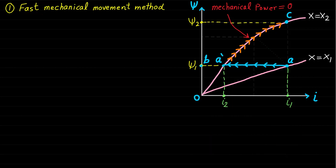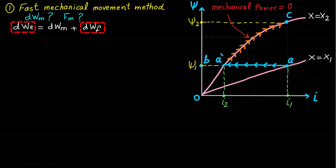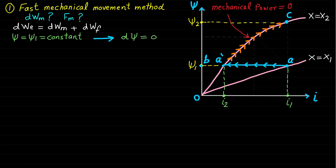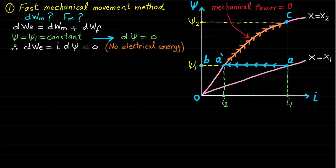To identify the change of mechanical energy DWM and the mechanical force FM expressions, we use the balance equation DWE = DWM + DWF, and find both the change of electrical energy DWE and the change of field energy DWF. Since the magnetic field linkage is constant and equal to ψ₁, the change in magnetic field linkage dψ is zero, and therefore the change in electrical energy DWE equals I·dψ = zero. In other words, there is no change in electrical energy.